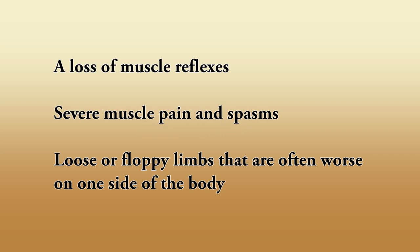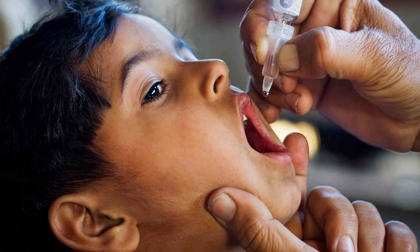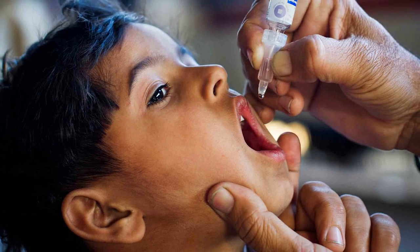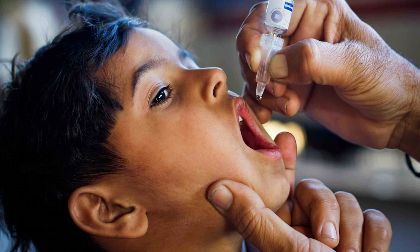However, most people with polio don't display any symptoms or become noticeably sick. When symptoms do appear, they differ depending on the type of polio. Symptoms include loss of muscle reflexes, severe muscle pain and spasms, and loose or floppy limbs — often worse on one side of the body. Prevention: polio vaccinations or boosters are highly recommended for anyone who is not vaccinated or unsure whether they are.